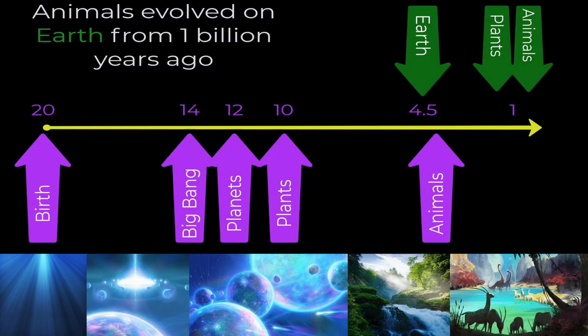This story begins 20 billion years ago when the Universe began as a point of light. A Big Bang expansion occurred 14 billion years ago. The first planets formed 12 billion years ago, and the first plants 10 billion years ago. Earth formed 4.5 billion years ago. Animals evolved 4 billion years ago, plants evolved on Earth 1.5 billion years ago, and animals from 1 billion years ago.